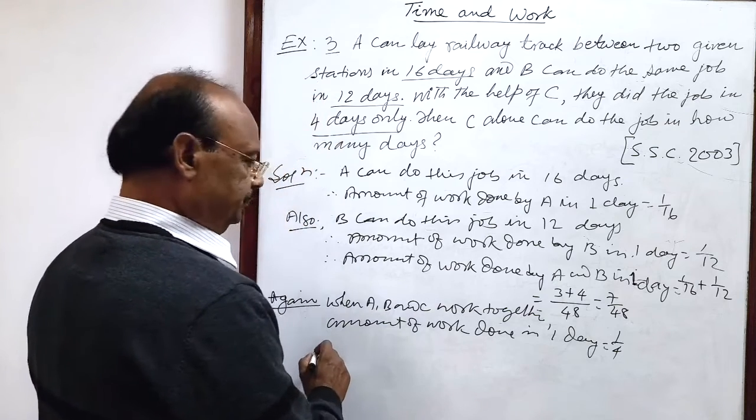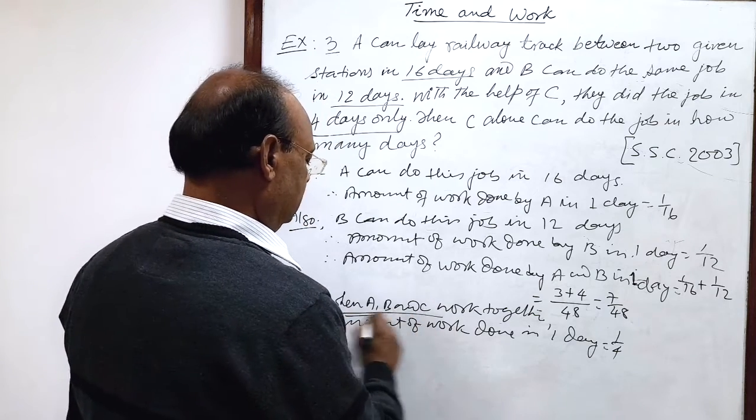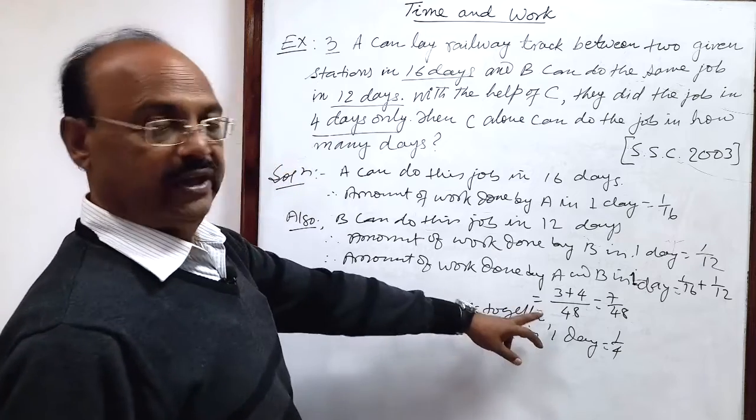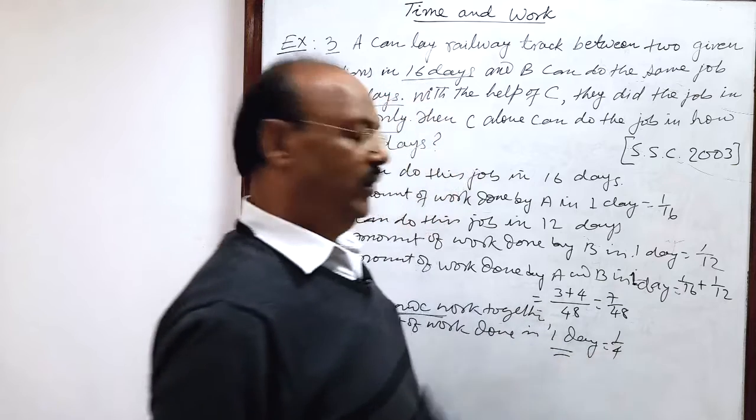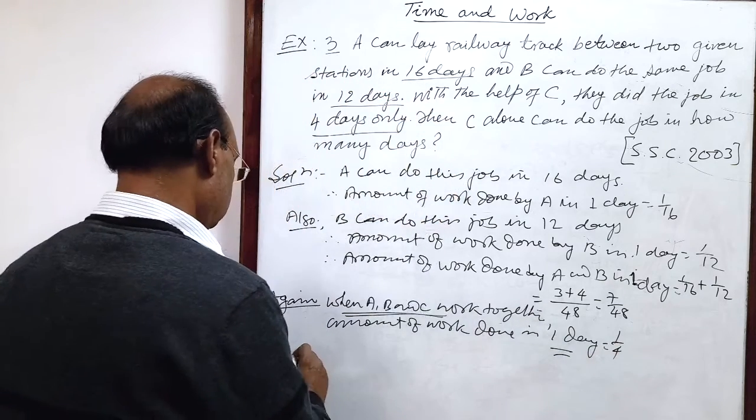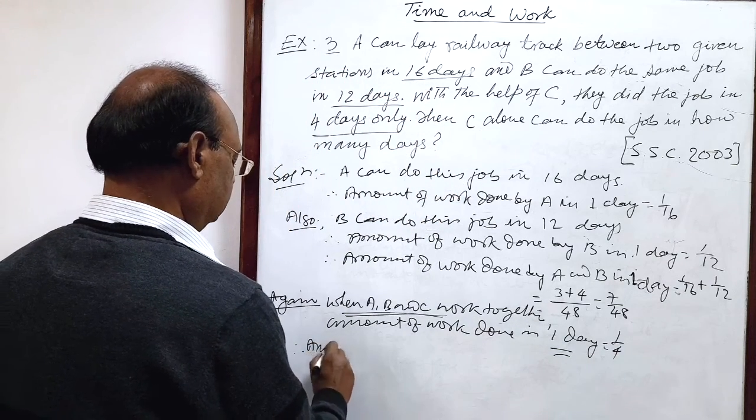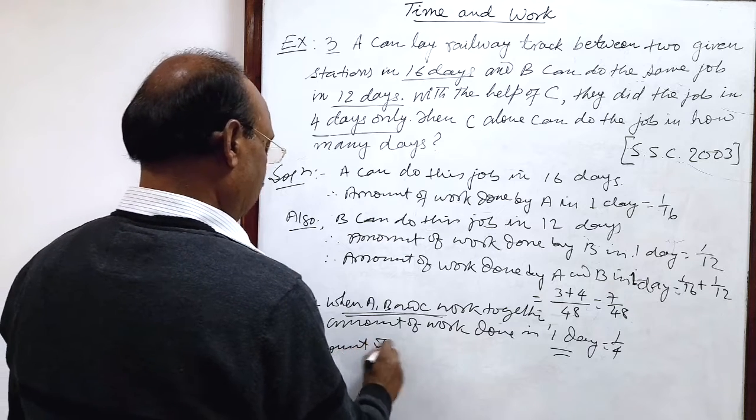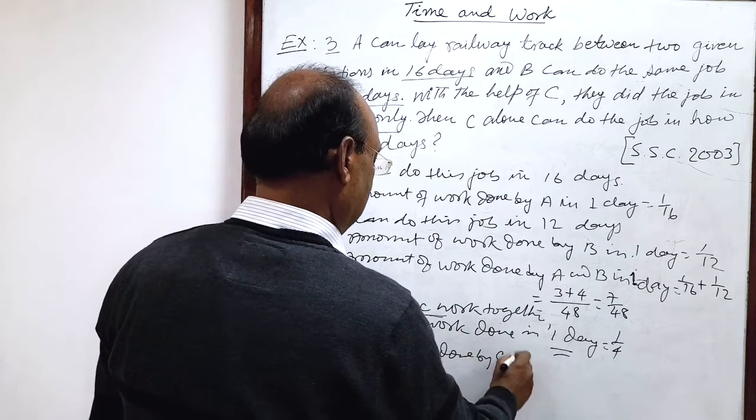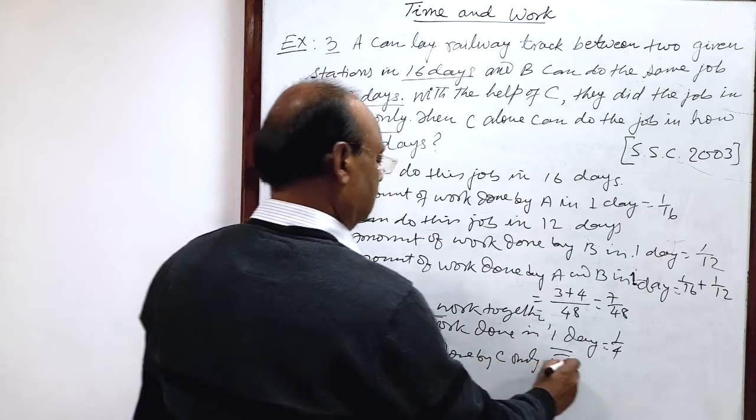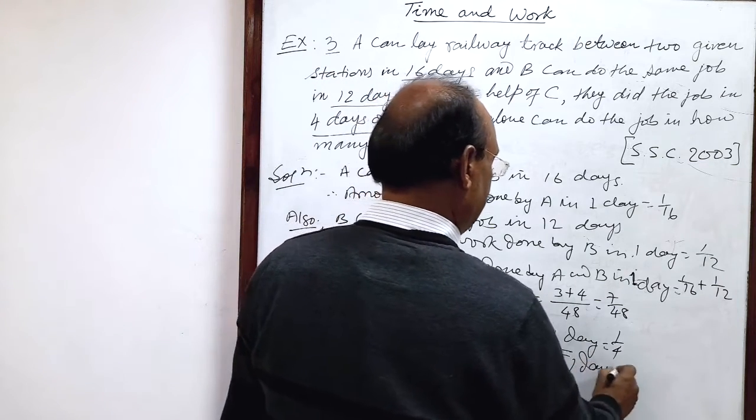So when A, B and C, all the three work together, in that case, amount of work done in one day is 1 by 4. So therefore, amount of work done by C only in one day will be how much?